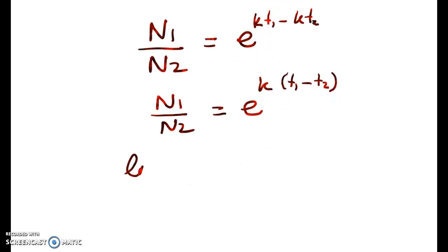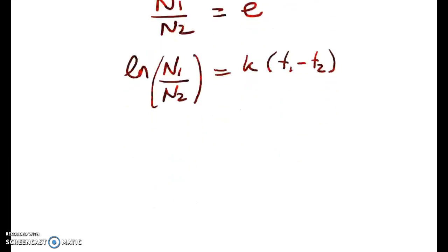If I now take logs of both sides, I've almost got my result. Now we're told that n1 and n2 are positive, so we know that we've got no dramas with logs. Logging this side we get k times that. So my final step is to divide through by t1 minus t2, and we get the desired result.